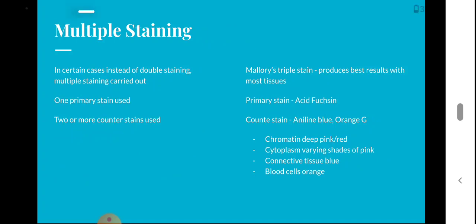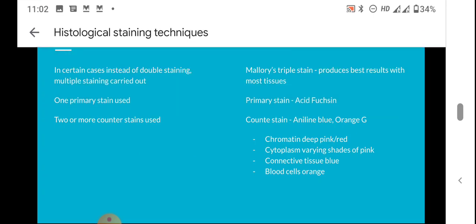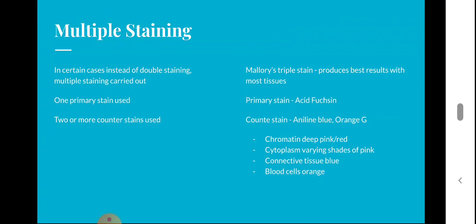In certain cases, multiple staining is carried out instead of double staining. Here one primary stain is used along with two or more counter stains. For example, Mallory's triple stain produces the best results with most tissues. The primary stain is acid fuchsin and the counter stains are aniline blue and orange G. After Mallory's triple stain, chromatin appears deep pink or red, cytoplasm in varying shades of pink, connective tissue in blue, and blood cells in orange.